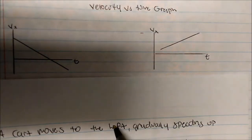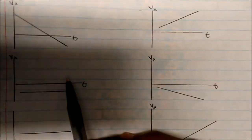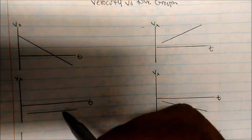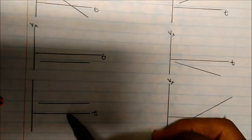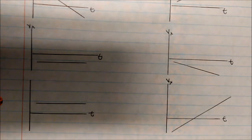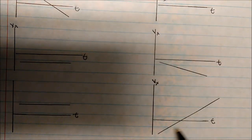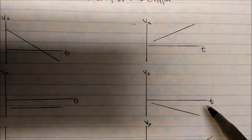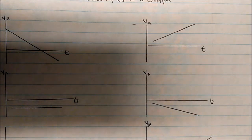The first question says a cart moves to the left gradually speeding up. This one moves to the right and then to the left, so it cannot be this one. This one moves to the left — it's beneath zero — but it's constant. These others move to the right, above zero, and are constant. The answer we want is negative x direction, going away from zero, so it's gradually speeding up while moving to the left. Therefore, this must be A.